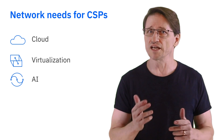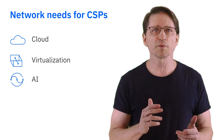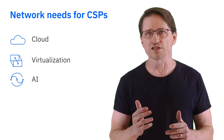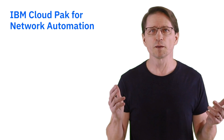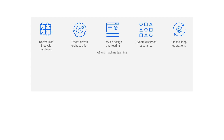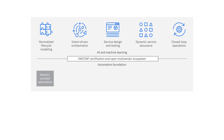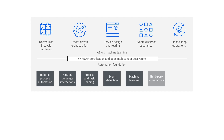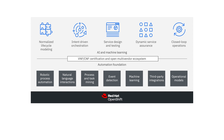Many CSPs recognize the potential of AI to automate problem detection and remediation. Enter IBM Cloud Pak for network automation. Based on years of IBM experience working with telecom partners, IBM Cloud Pak for network automation helps CSPs transform their networks, evolve zero-touch operations, reduce operating expense, and deliver services faster.